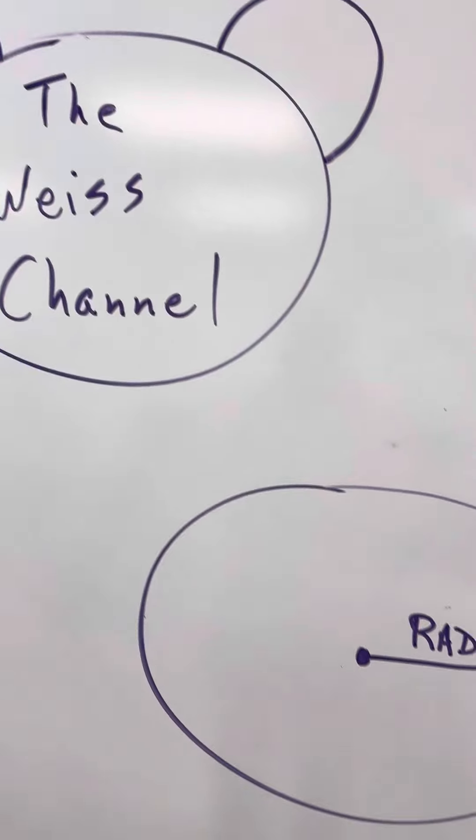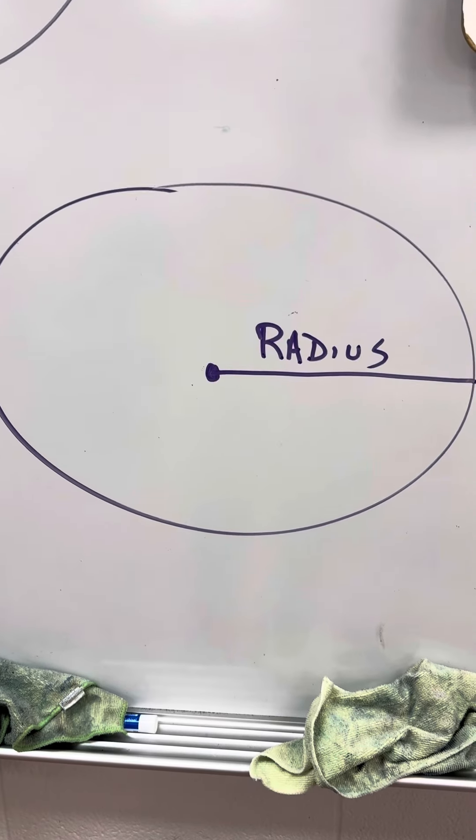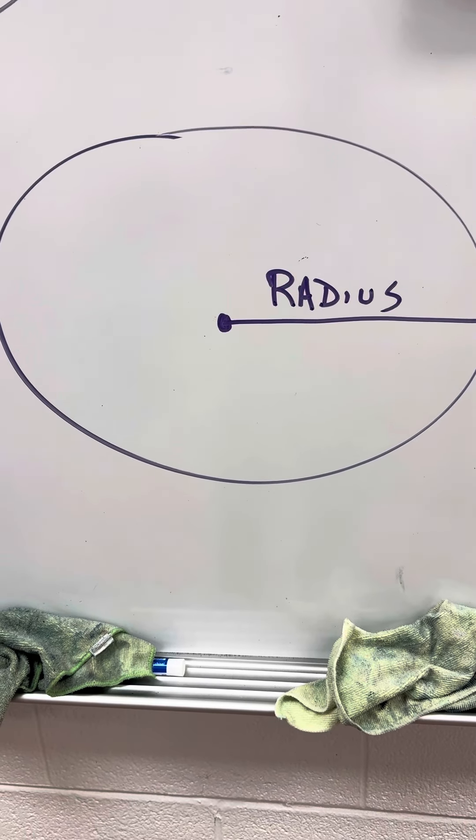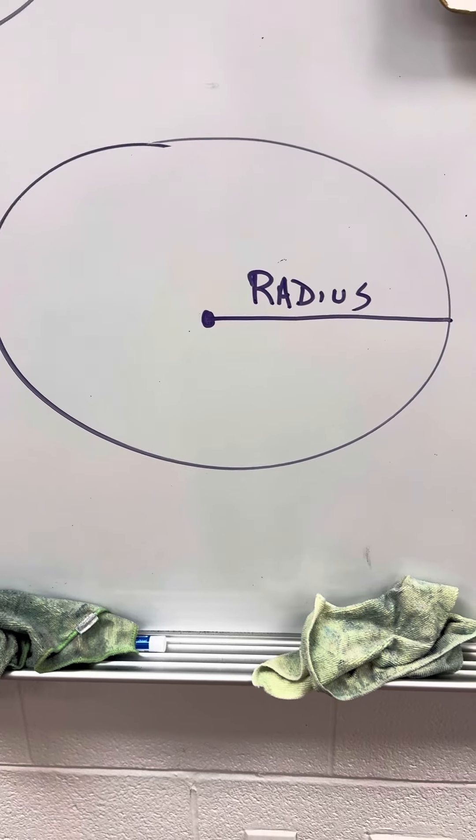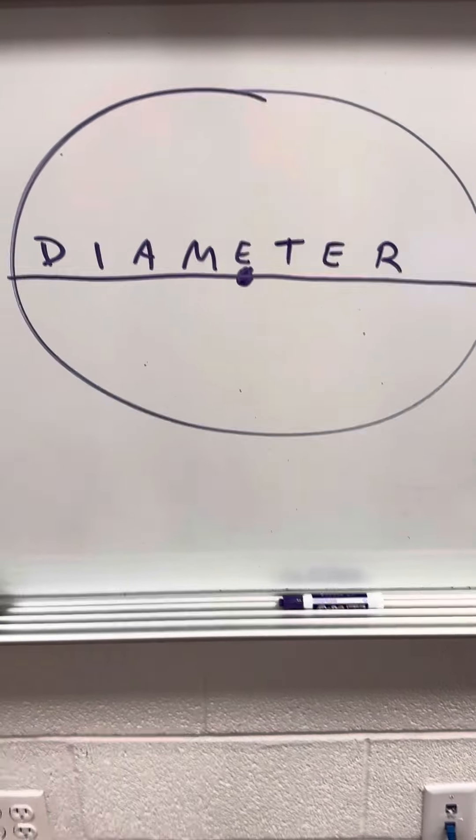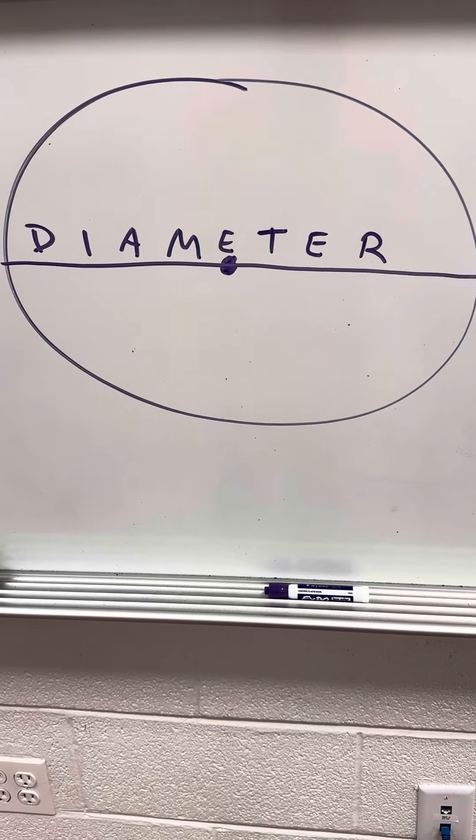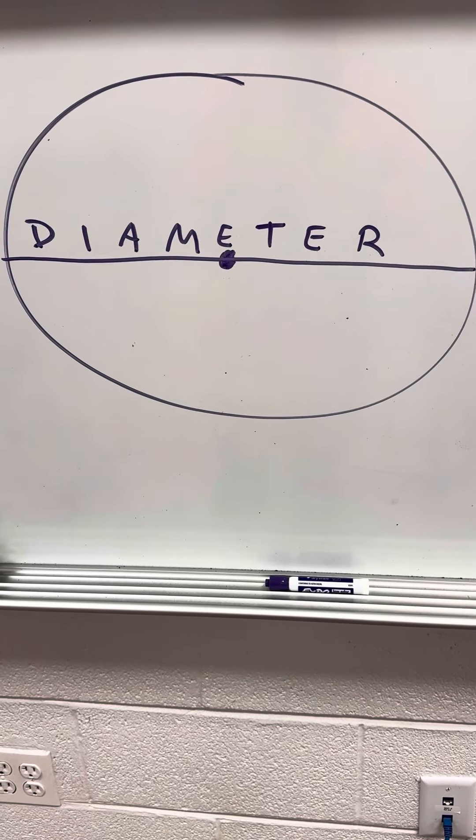Please recall that this is the radius of a circle, halfway across the circle from the center. This is the diameter of a circle, all the way from one side to the other side, through the center is the diameter.